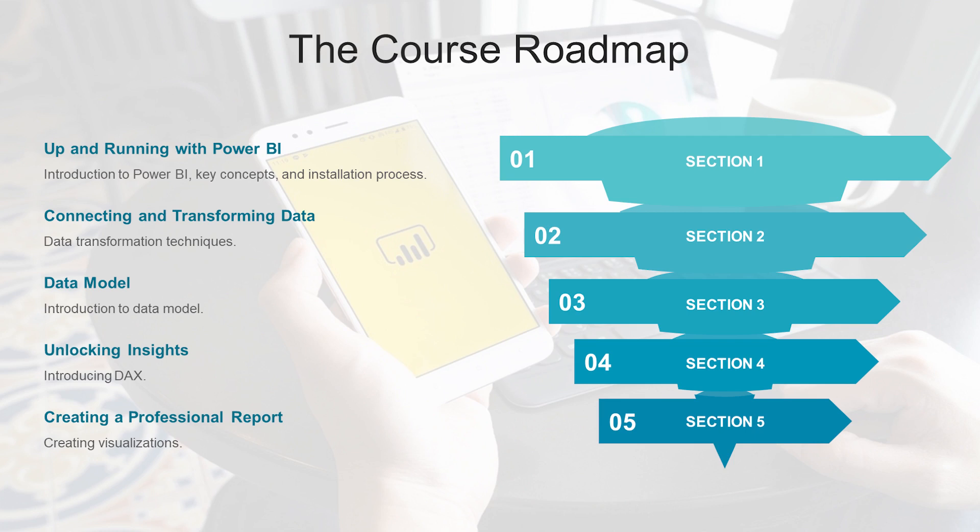At the next step, in the third section, we will talk about data model — how you can organize your tables, how you can manage the relationship between tables. We will introduce lookup tables and fact tables, and we will talk about primary keys and foreign keys, and also schemas, star schemas and snowflake schemas.